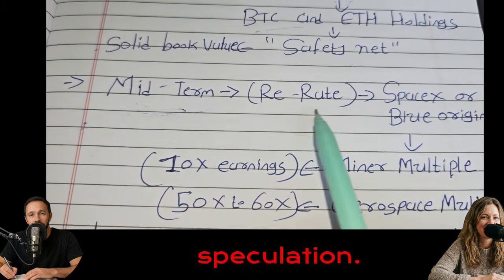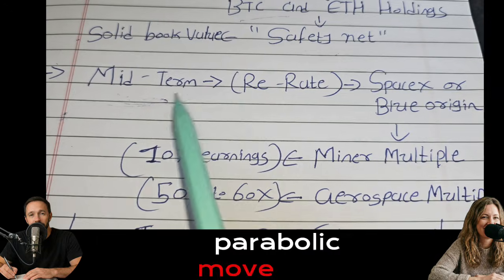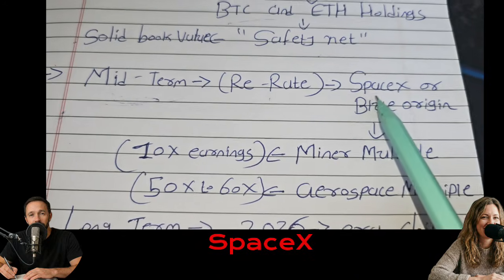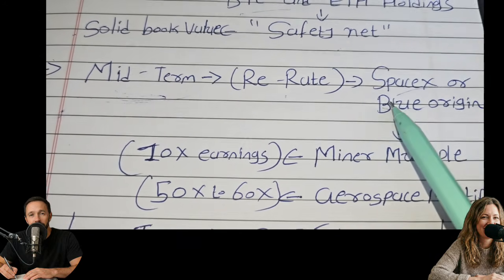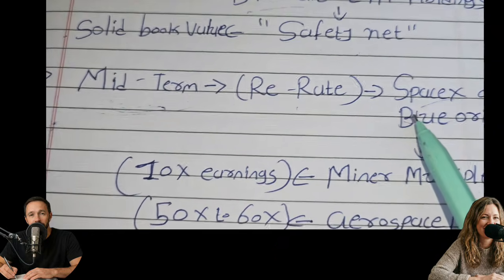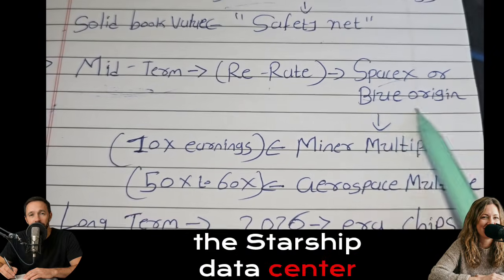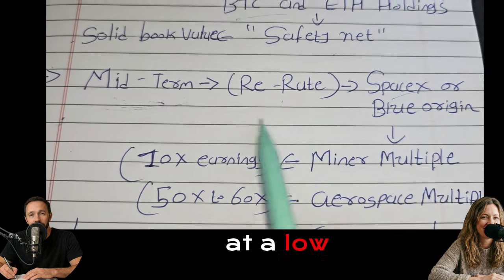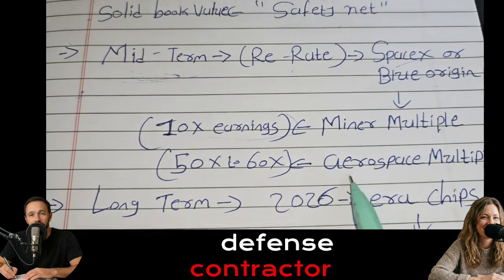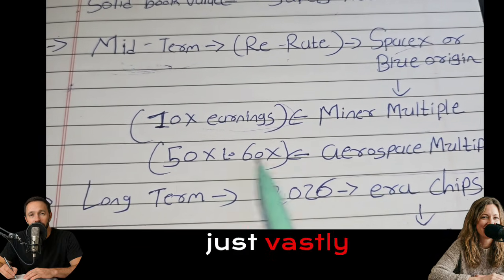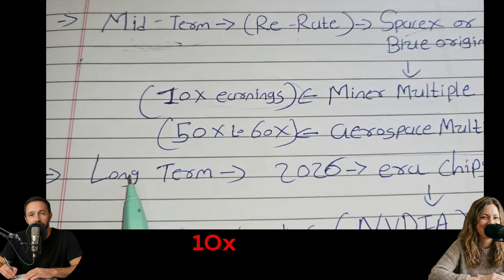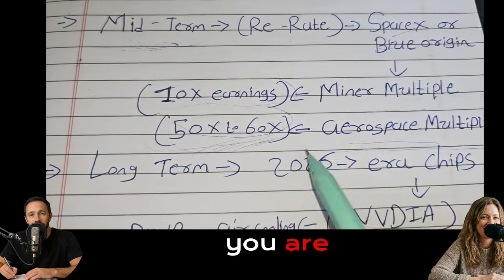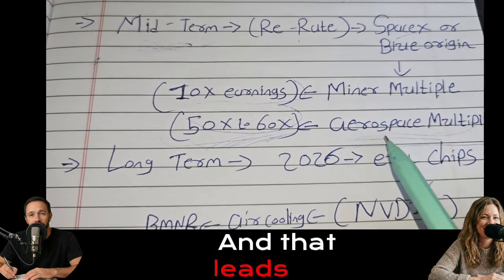But the midterm is where the fireworks could be. The aerospace speculation. The report predicts a parabolic move in the stock price if a formal partnership is announced. And it explicitly lists the giants. SpaceX or Blue Origin. Let's just play that out. If BMNR announces tomorrow that they are the official thermal management partner for the Starship Data Center program. The market re-rates the stock instantly. It stops being priced like a Bitcoin miner, which trades at a low multiple. And it starts being priced like a defense contractor or an aerospace tech firm. And those multiples are just vastly different. We're talking about going from maybe 10x earnings to 50x or 60x. Because suddenly, you're not just chasing the price of a coin. You are critical infrastructure for the next 50 years.